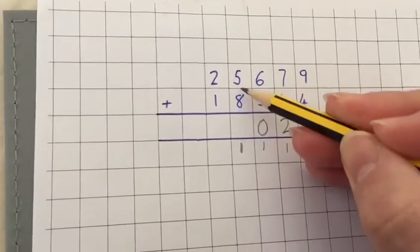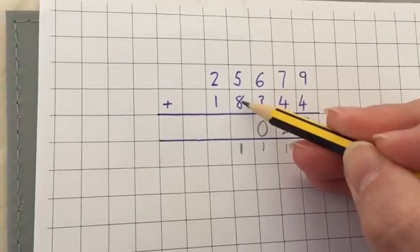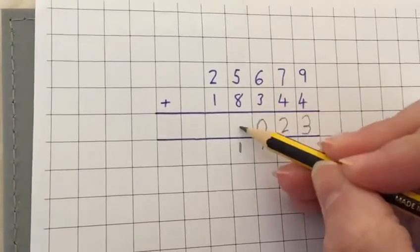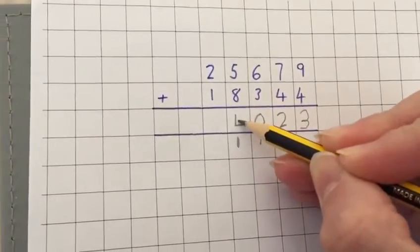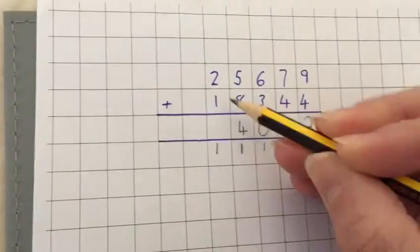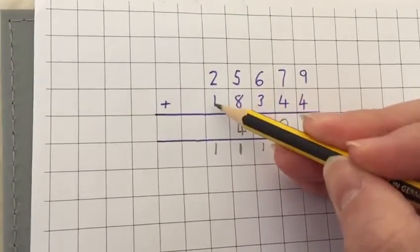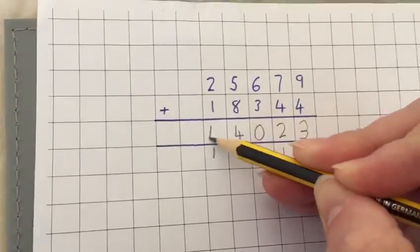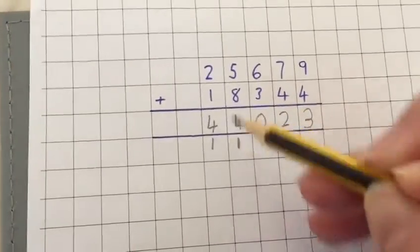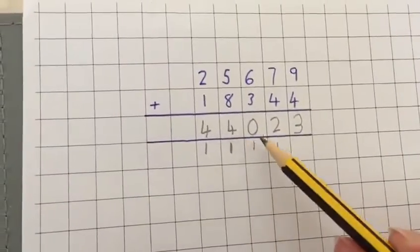And now you've got your next digits. So you've got your 5 and your 8 which is 13. Add your 1 which is going to be 14. So you put your 4 in and then exchange 1 over to the other side. And then you've got your 2, your 1 and your final 1 which is going to make 4. So you get to your final answer of 44,023.